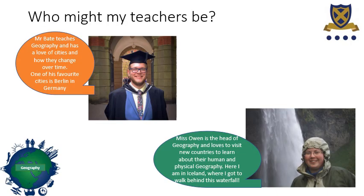On this slide you can see a picture of myself, Mr. Bate. I teach geography and I've got a love for cities and how they change over time. Human geography is my favourite kind of geography, and one of my favourite cities is Berlin in Germany. The picture at the bottom is Miss Owen — she's the head of the department. She loves to visit new countries and learn about both their human and physical geography. In the picture she's actually in front of a waterfall that she got to walk behind shortly after the picture was taken, in Iceland.